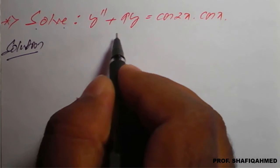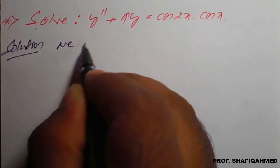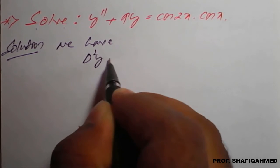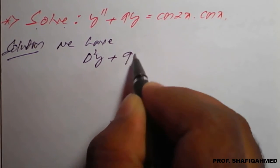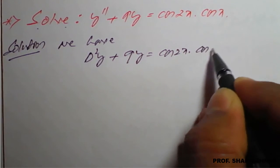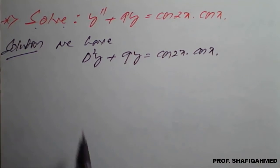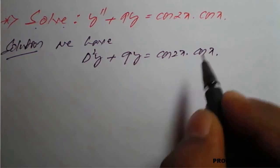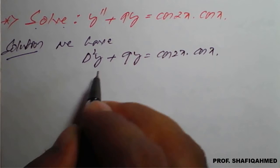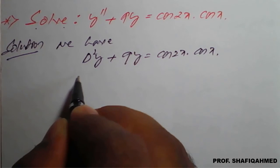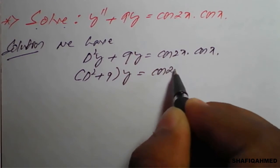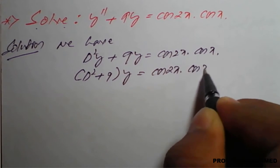We can rewrite the equation as: y'' can be written as D²y, so (D² + 9)y = cos(2x)·cos(x). The left-hand side will give us the complementary function, and the right-hand side will give the particular integral. First, we go for the left-hand side — taking y common, it becomes (D² + 9)y = cos(2x)·cos(x).